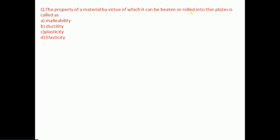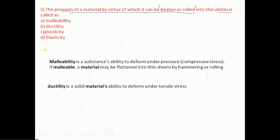The property of a material by virtue of which it can be beaten or rolled into thin plates is called: malleability, ductility, plasticity, or elasticity. Malleability is a substance's ability to deform under compressive stress — a malleable material may be flattened into thin sheets by hammering or rolling. Ductility is the ability to deform under tensile stress. Plasticity and elasticity are also wrong answers. Therefore, the property is malleability.